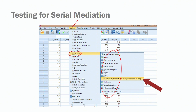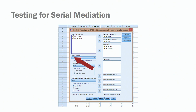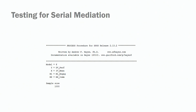We are using the PROCESS macro developed by Hayes, so click on the PROCESS macro. On the next screen, you'll have to move your variables to the right positions. For our outcome variable we have performance, for our independent variable we have meaningfulness, and for our mediator variables we have job engagement and commitment. This is the same screen as in the parallel mediation session. What changes is the model number — now you need to choose Model number 6, not Model number 4. Once you do that, click OK.